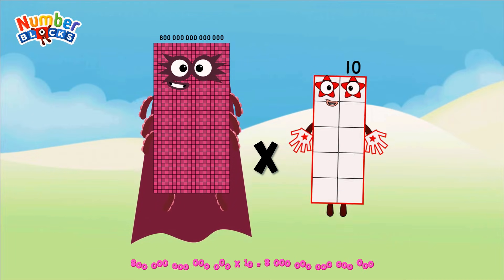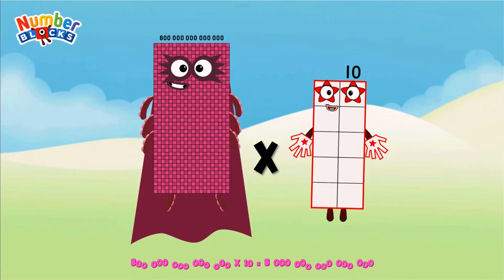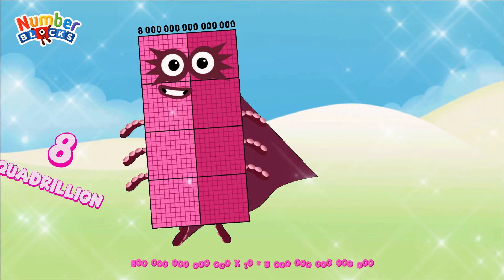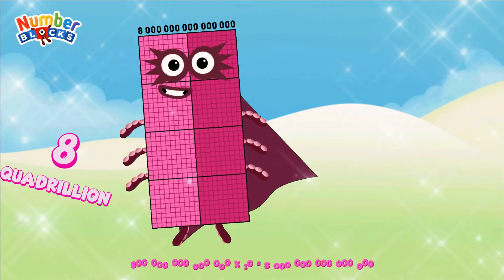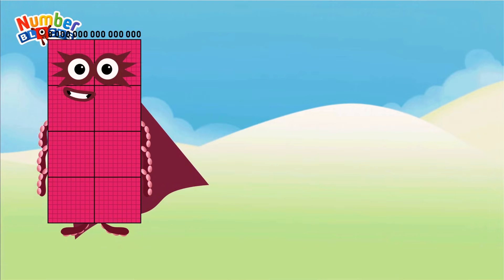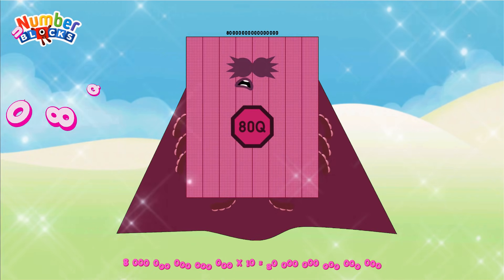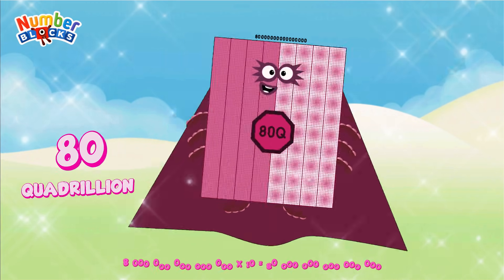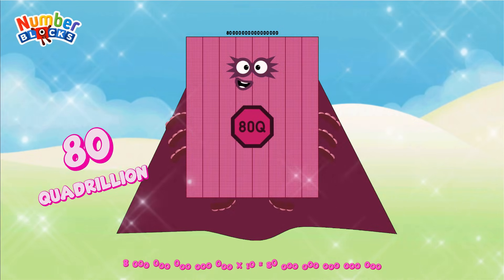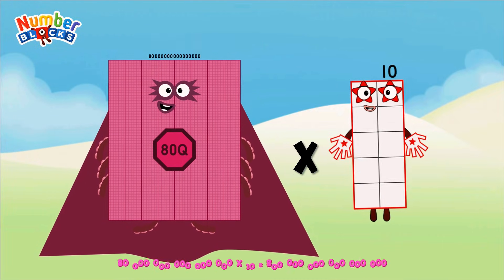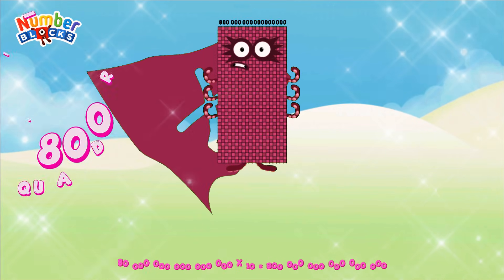800 trillion multiplied by 10 equals 8 quadrillion. 8 quadrillion multiplied by 10 equals 80 quadrillion. 80 quadrillion multiplied by 10 equals 800 quadrillion.